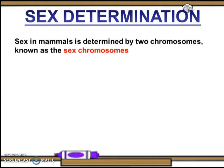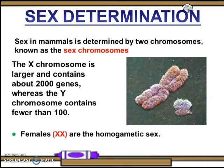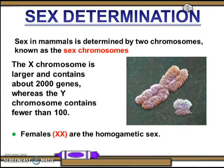A sex determination system is a biological system that determines the development of sexual characteristics in an organism. Most sexual organisms have two sexes. The XX-XY sex determination system is the most familiar, as it is found in human beings, most other mammals, as well as some insects. Each chromosome has replicated to form two identical strands or chromatids, and the area linking the chromatids is the centromere. The sex chromosomes inherited during fertilization determine a person's gender.